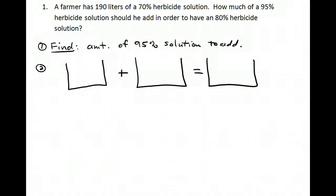Here's our first problem: A farmer has 190 liters of a 70% herbicide solution. How much of a 95% solution should he add in order to have an 80% herbicide solution? First, in the top of each bucket put the percent concentration. This one is 70%, the second one is 95%, and in our mix we want 80%.